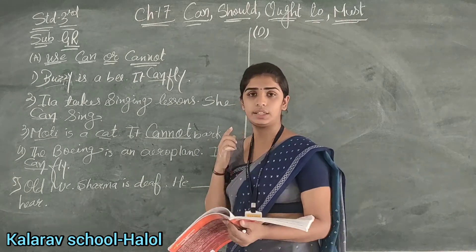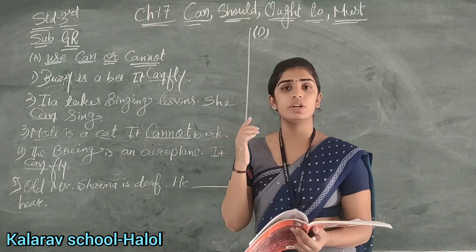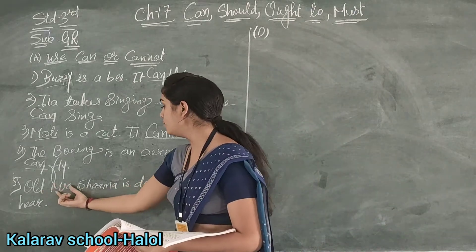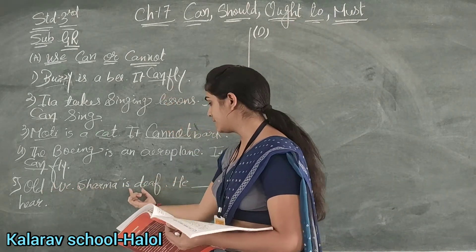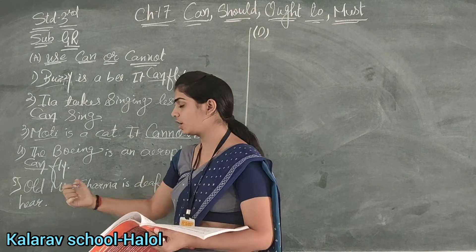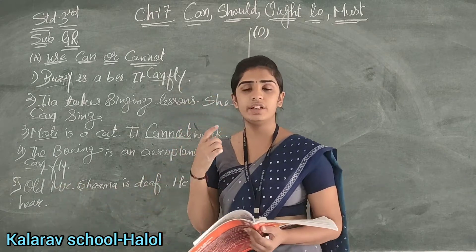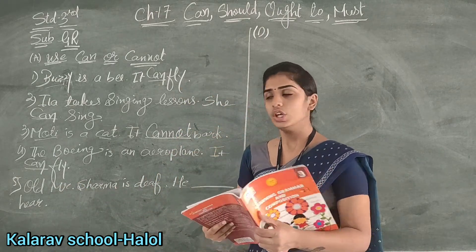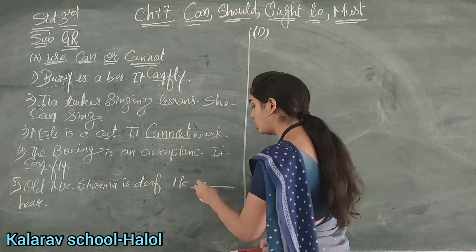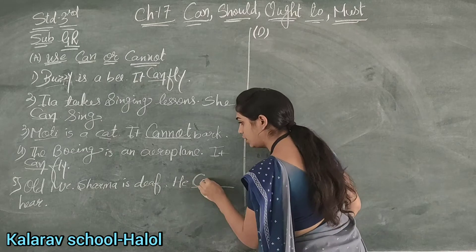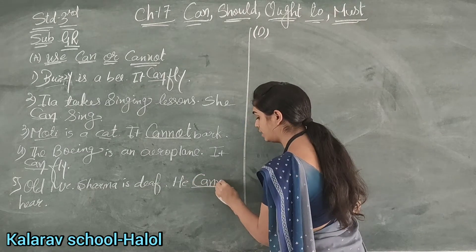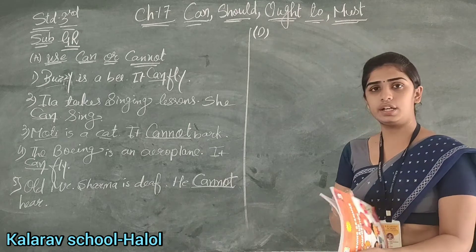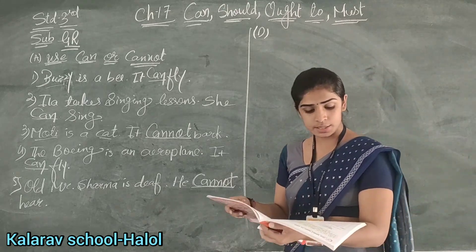Deaf means the one who cannot hear. That is known as deaf. So Old Mr. Verma is deaf — he dash hear. If he is deaf, meaning he cannot hear anything, so he cannot hear. For number five we will write: cannot hear. Clear?